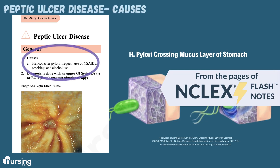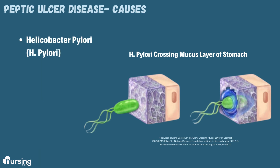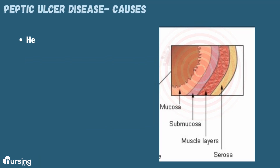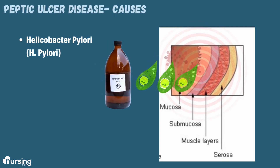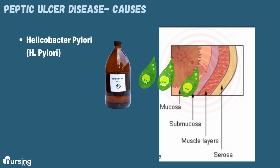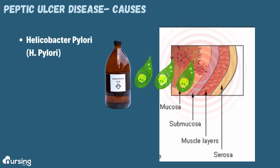One of the leading culprit causes important to know regarding peptic ulcer disease is H. pylori, also known as Helicobacter pylori. Essentially, it is an infection that results in inflammation of that mucosal lining of the stomach, causing a breakdown in that mucosal lining, which then allows stomach acid to chew through that lining in the stomach.